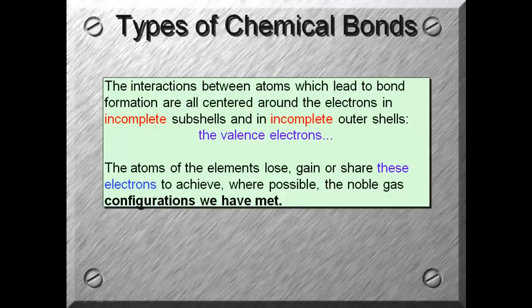The interactions between atoms which lead to bond formation are all centered around the electrons in incomplete subshells and in incomplete outer shells: the valence electrons. So all bonding will deal with the outermost energy level, which is where the valence electrons are found. The atoms of the elements lose, gain, or share these electrons to achieve, where possible, the noble gas configurations.